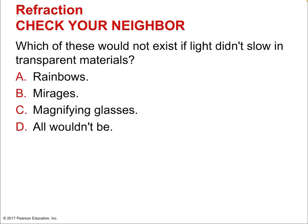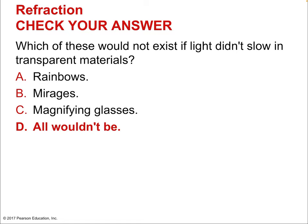Which of these would not exist if light didn't slow in transparent materials — rainbows, mirages, magnifying glasses, or all of them? It turns out all of them depend on refraction. All images created by lenses depend on bending light, mirages are all about bending light, and rainbows as well. They all depend on that bending of light — refraction. Some also depend on reflection, such as rainbows.